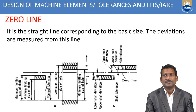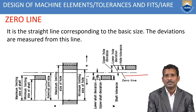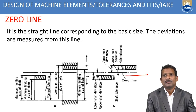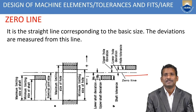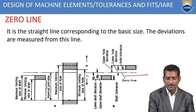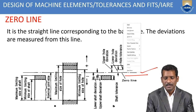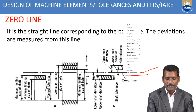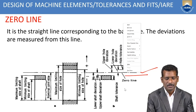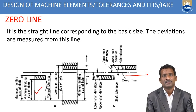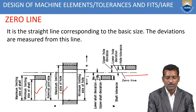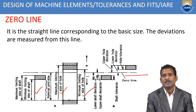The zero line is a straight line corresponding to the basic size. All sizes are referenced to this line — that is why it is called the zero line. Deviations are measured from this line only. Above the line, the lower and upper deviations for the hole are marked; below the line, the shaft deviations and shaft tolerance are also marked.